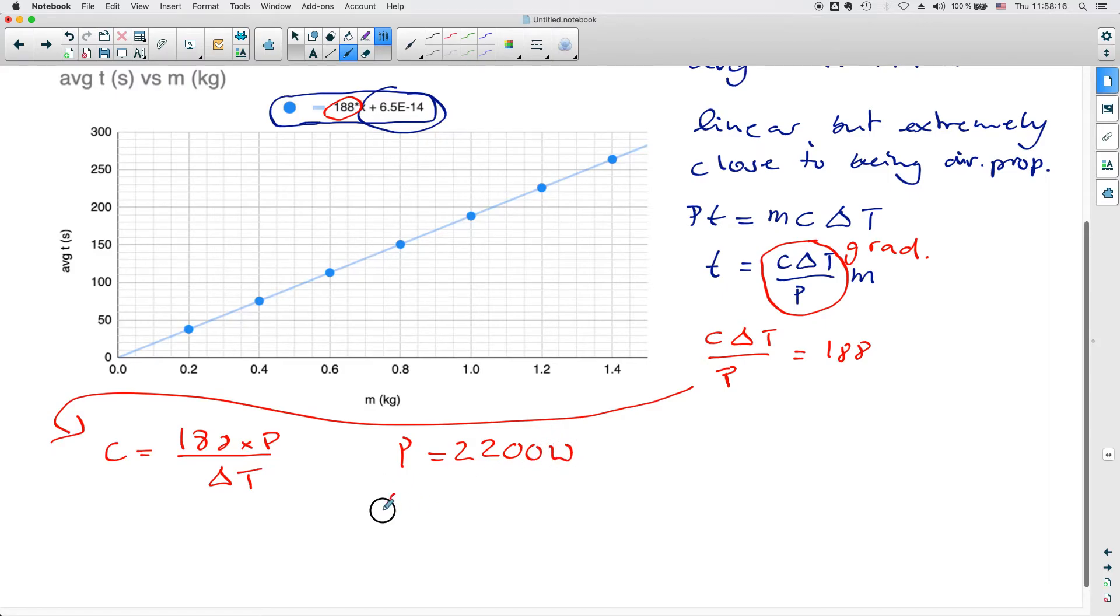So the power might have been something like 2200 watts. And say the change in temperature, if I started at 15 degrees celsius and my final temperature is the boiling point, then that would give me a change in temperature of 85 degrees. So that means if I put those values in, I would get 188 times 2200 divided by 85. And that gives me 4866, if I round it to zero decimal places.